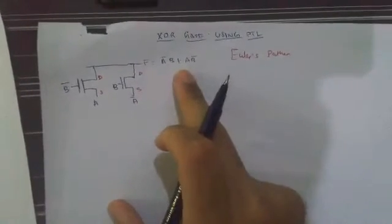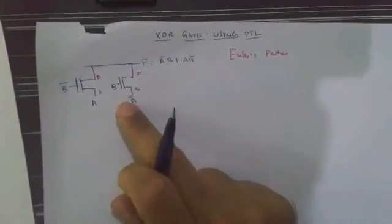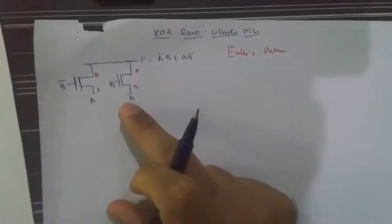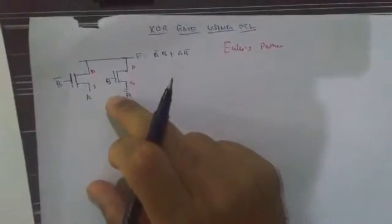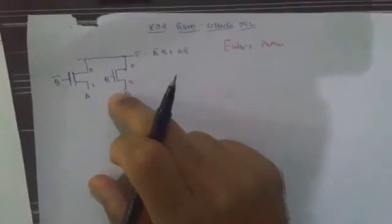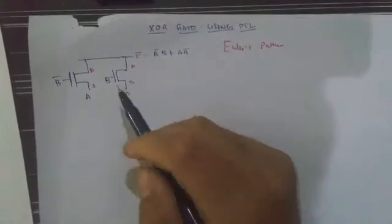This realizes a function of the XOR gate. Here only two transistors are present and both transistors are NMOS. I marked the source and drain regions of the transistors. Now I have to identify the Euler's path.